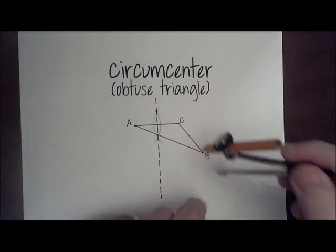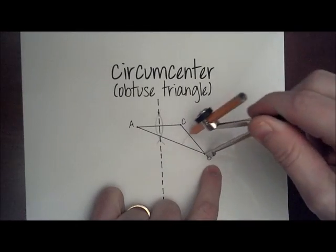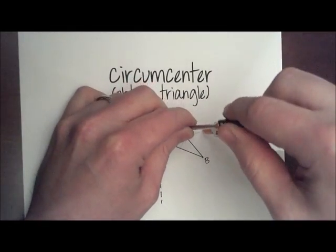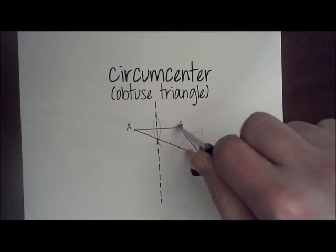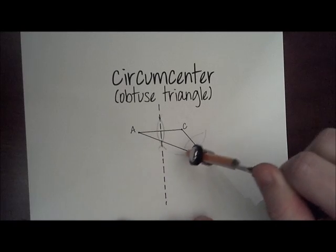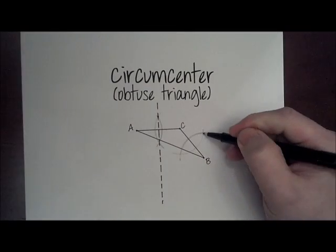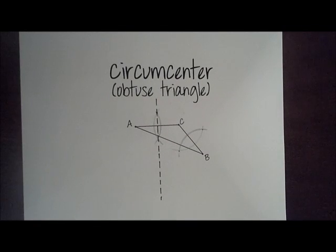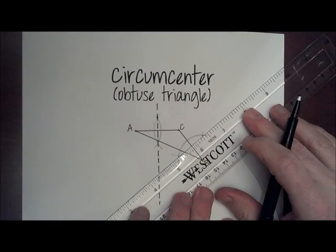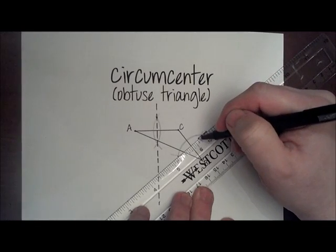I'll now do the perpendicular bisector of BC, making sure my compass is open more than halfway. I'll make that a little longer on the other side. Now between these two points of intersection, we will draw the perpendicular bisector as a dotted line.